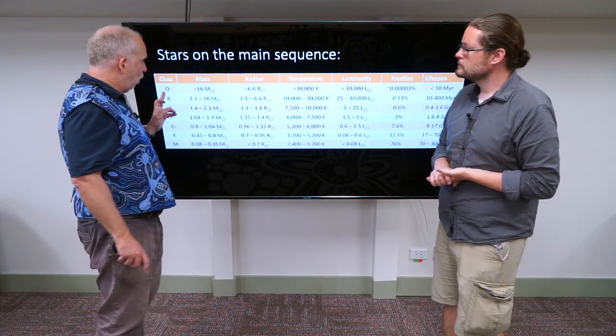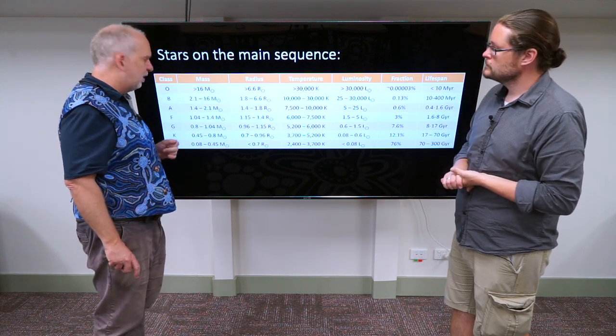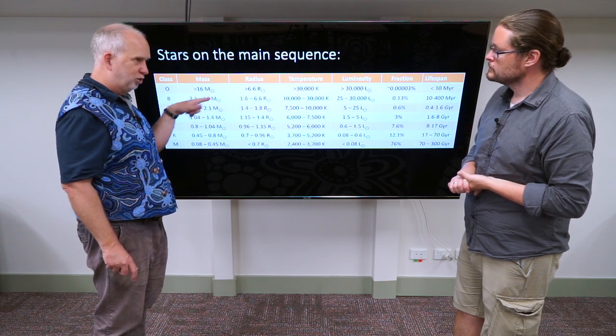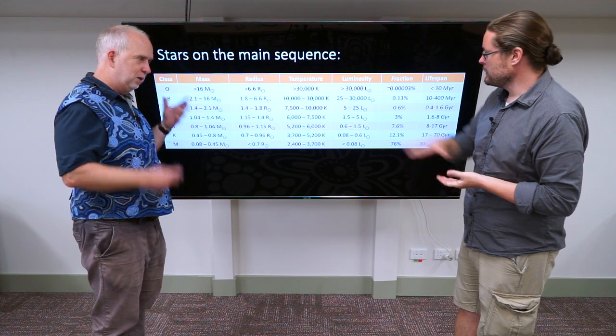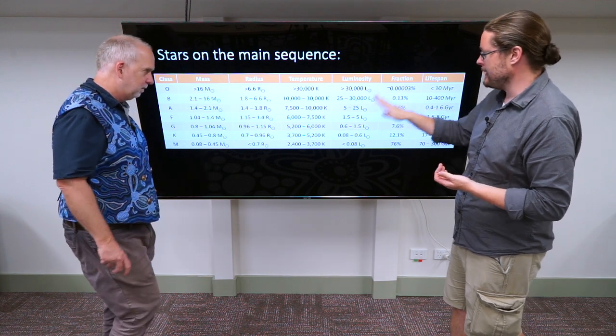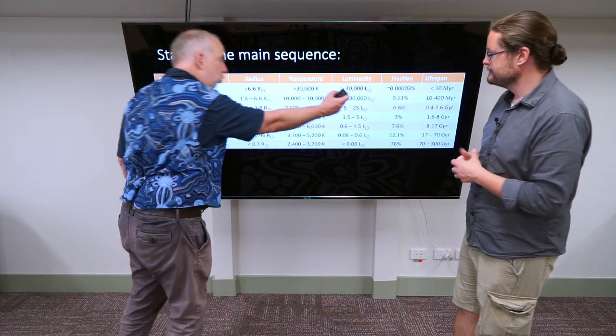So basically, O stars are more than about 16, this little circle dotted as the astrological symbol for the Sun, so that means mass of the Sun. We're going to be putting everything into scale of mass of the Sun, radius of the Sun, luminosity of the Sun.